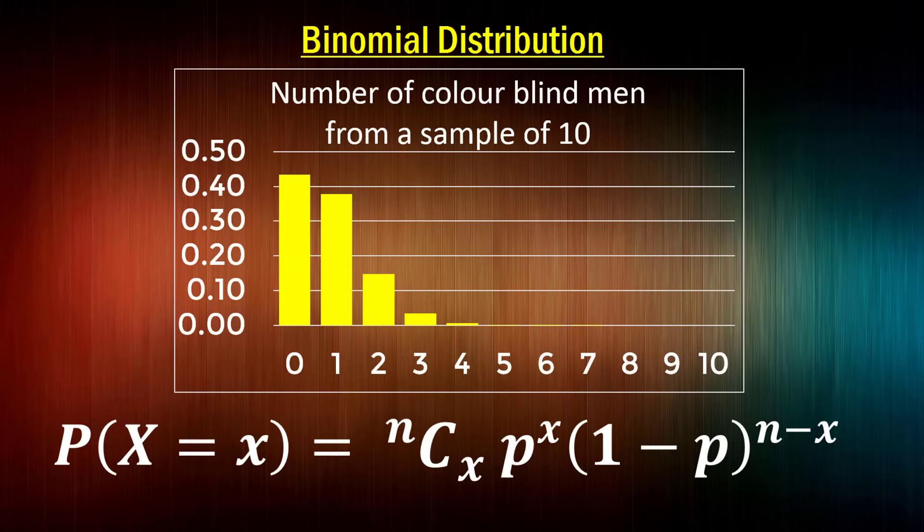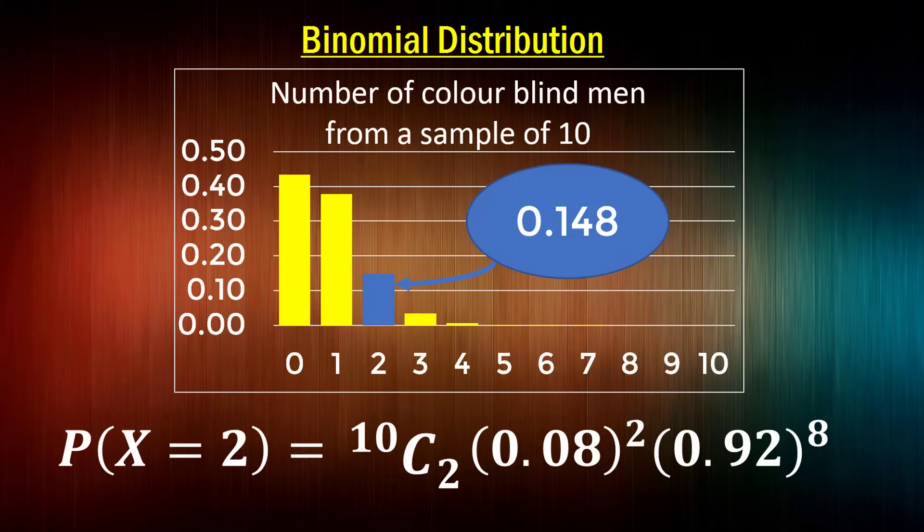So what we've effectively done in the last few examples is used this formula here to calculate the heights or the probabilities of each of the discrete outcomes of number of colorblind men out of 10 in the sample. So reading this formula, it says the probability of x, which is our random variable, is equal to a certain value, is equal to that combination function, choosing x colorblind men out of 10, n is going to be 10 in this case. And p is our probability of being colorblind, which is going to be 0.08. So we raise 0.08 to the power of however many colorblind people there are in the sample. And then we raise the probability of not being colorblind to the number of people in the sample that are not colorblind.